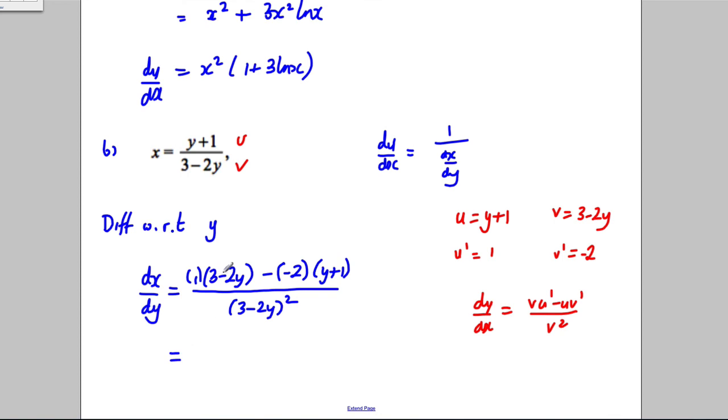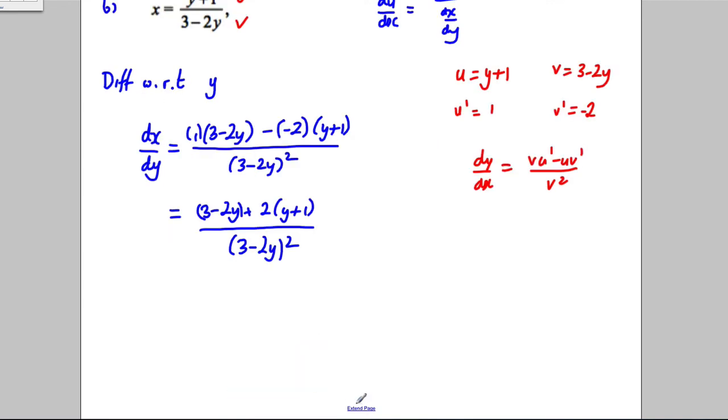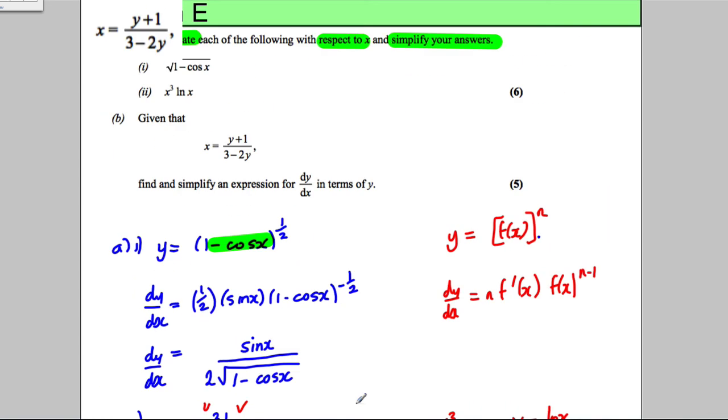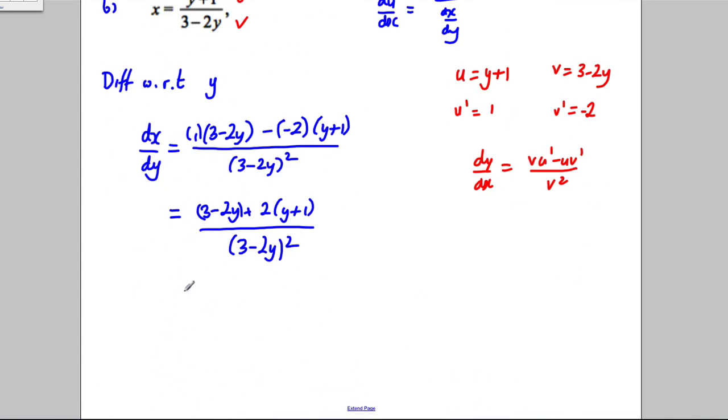Expanding this out: 3 minus 2y plus 2y plus 2, all divided by 3 minus 2y squared.